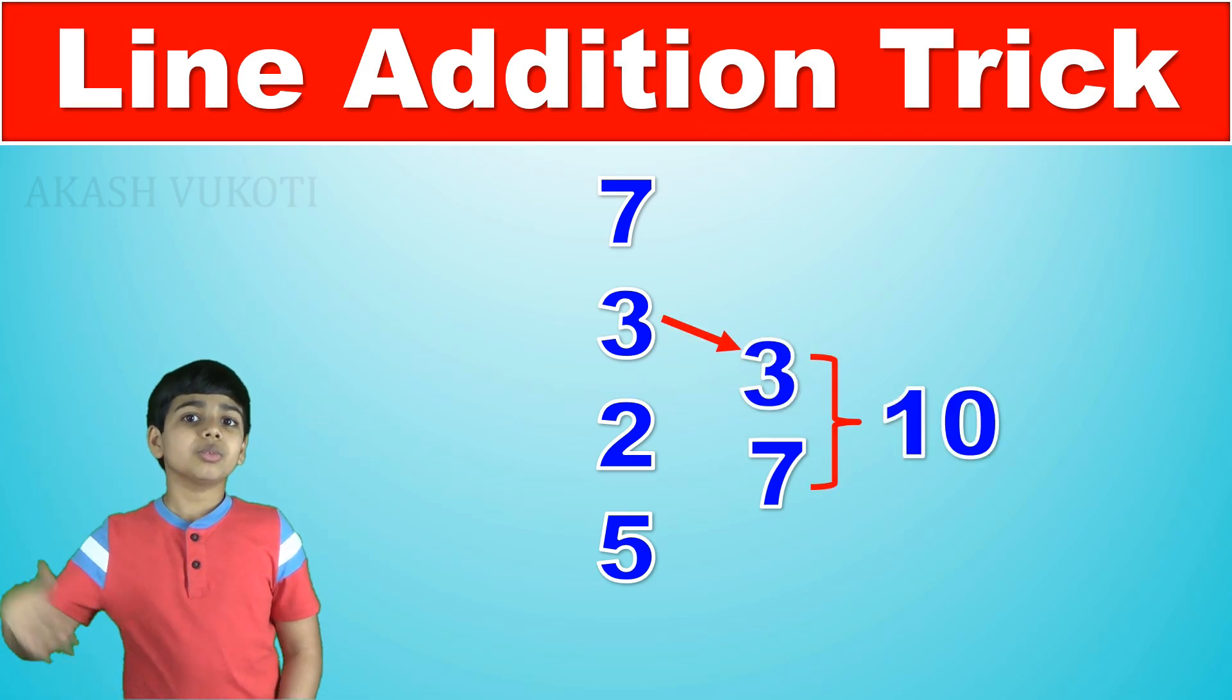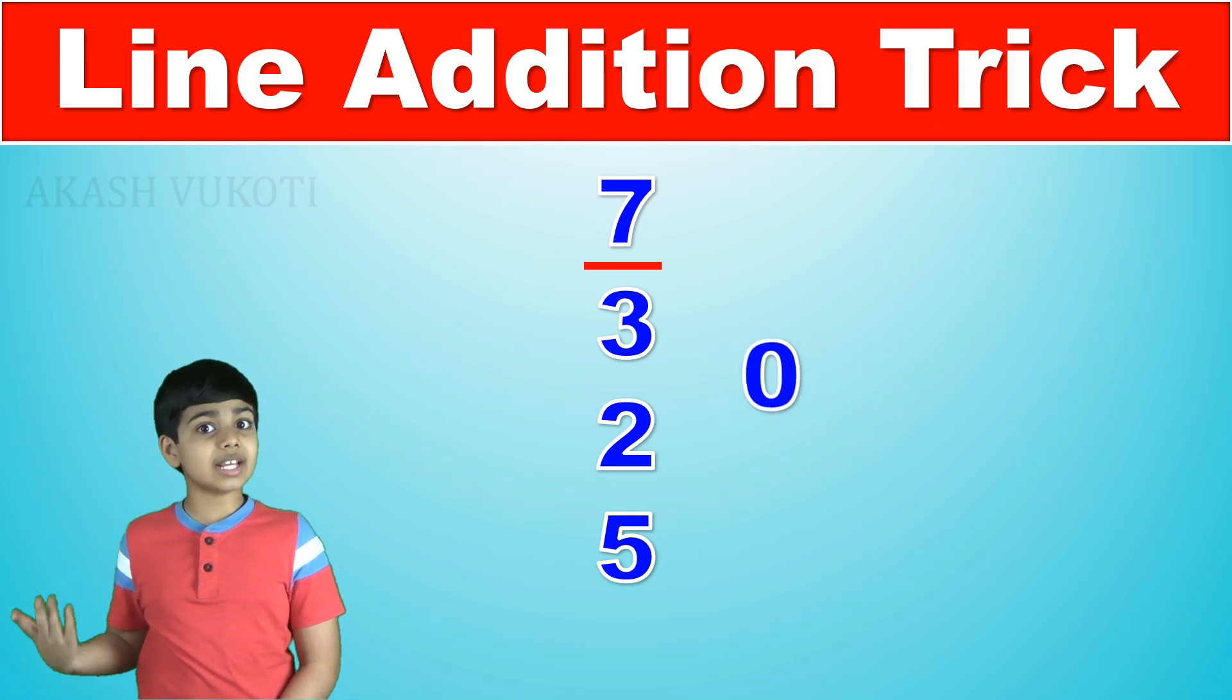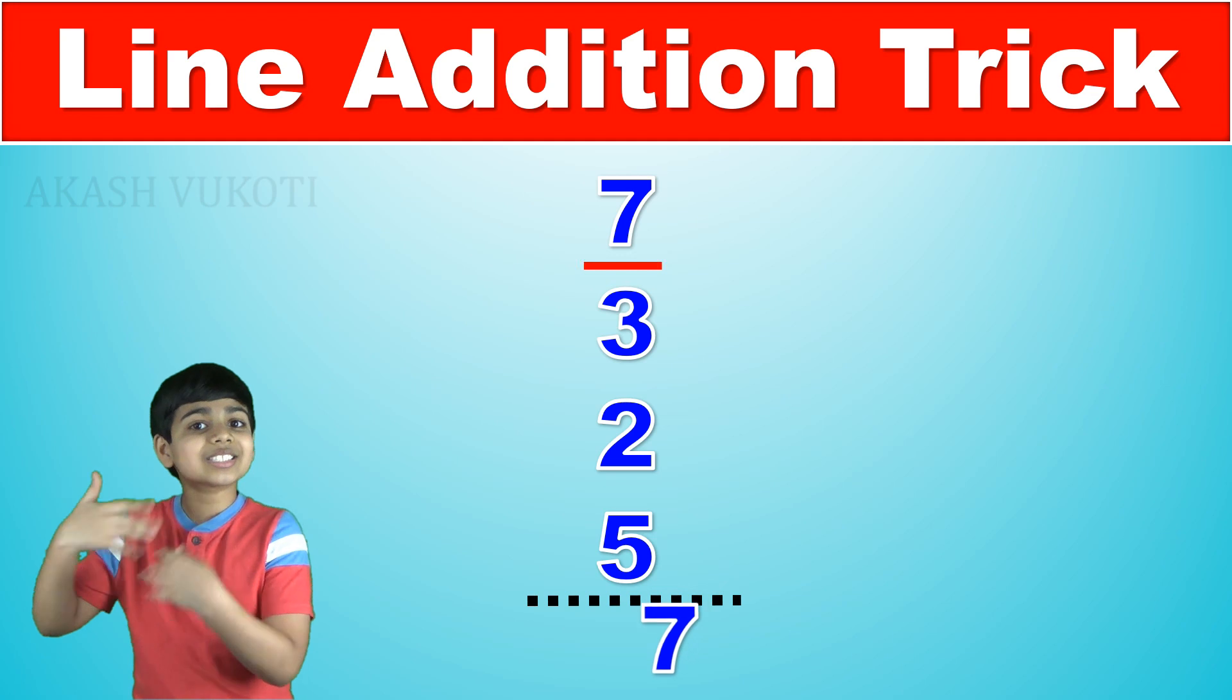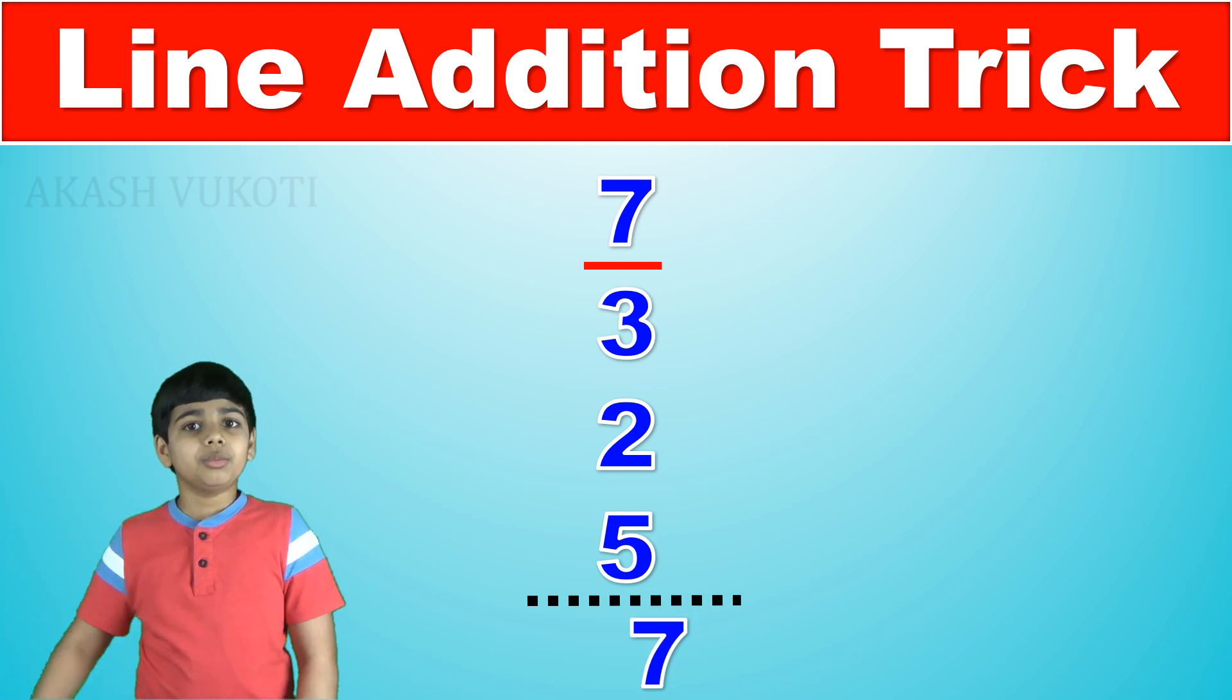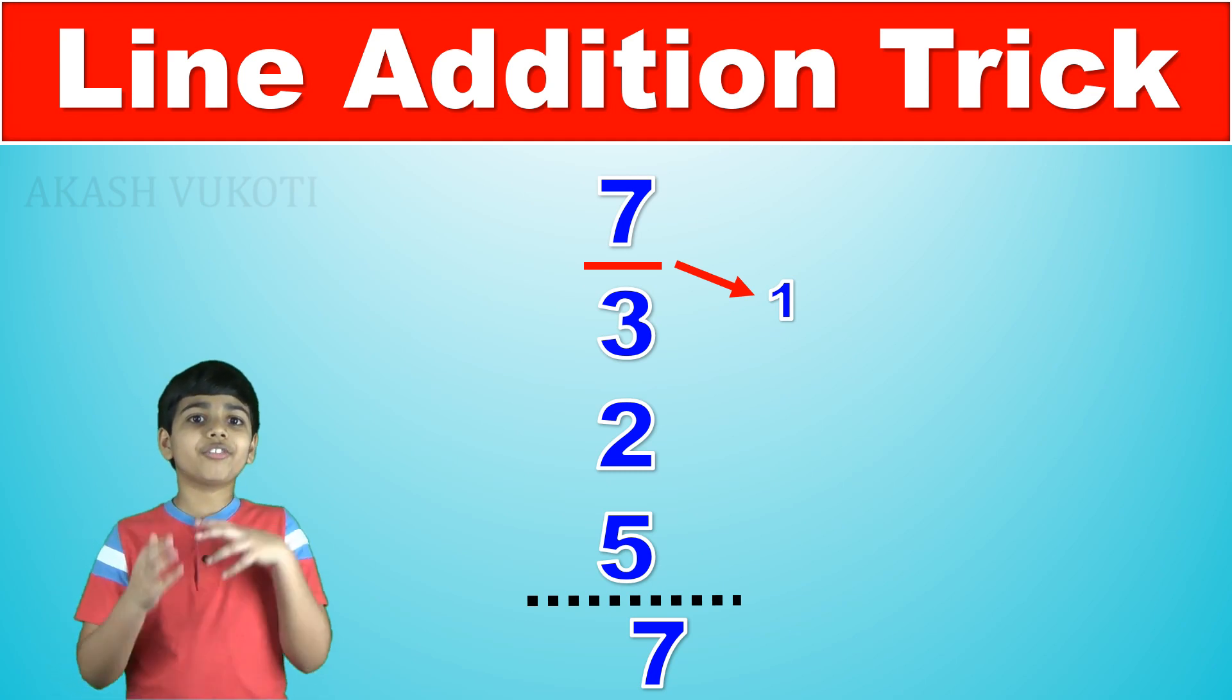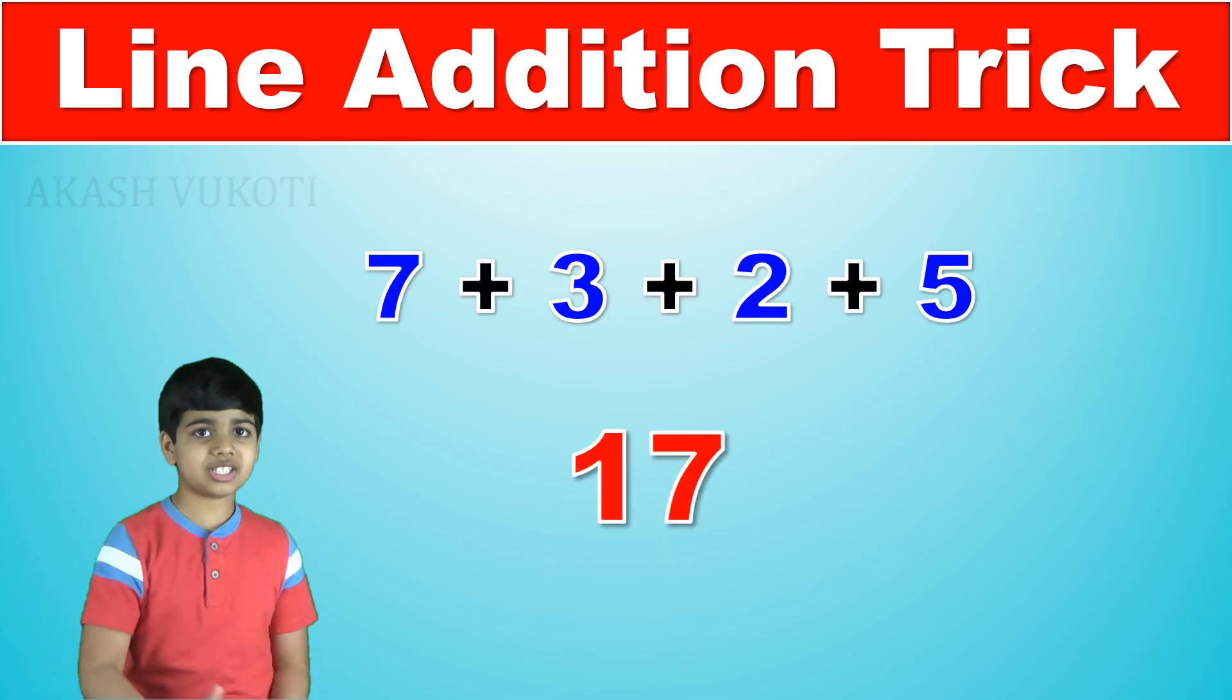And since we have reached 10 we drop it there by drawing a line and so we are left with 0. We don't have to add 0 with anything because anything plus 0 is still anything and the last number there is 7 meaning 7 is our last digit. Finally, we check how many lines we have drawn and there is only one line which means 1 is the first digit of the final answer which means that 7 plus 3 plus 2 plus 5 is 17.